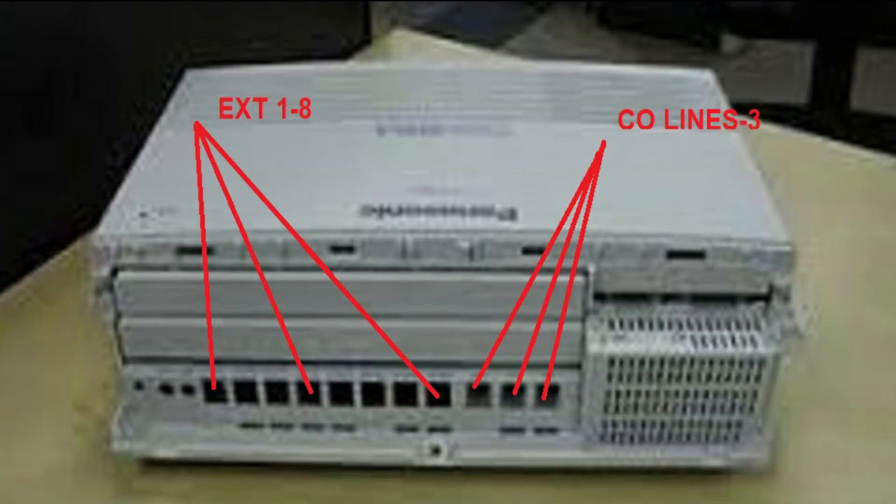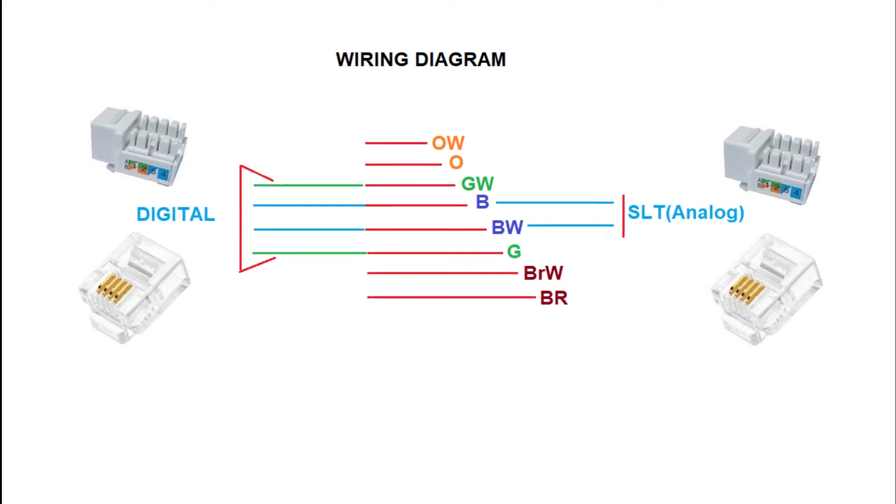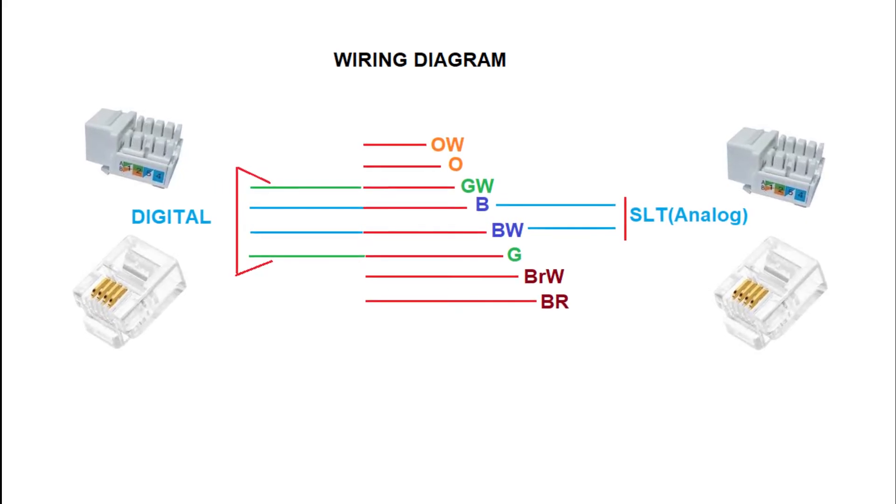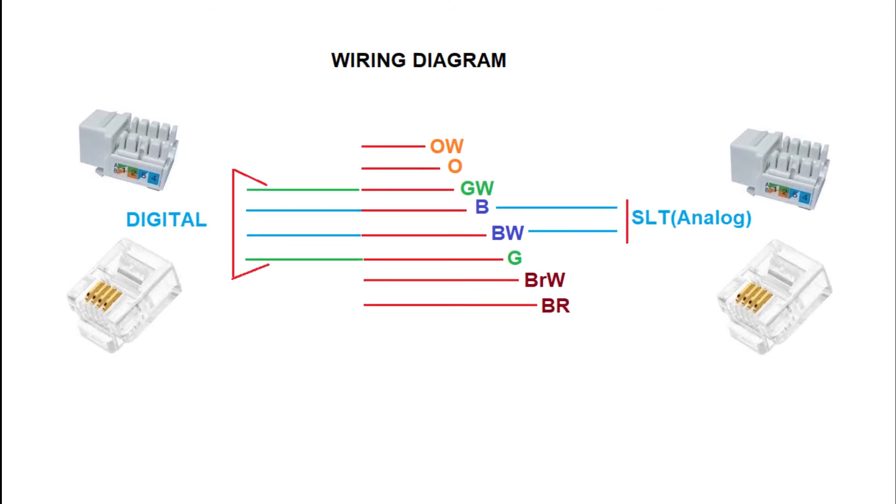Before starting, we need to know the basic structure of TES824 system. In basic model, we have inbuilt 3 CO lines and 8 extension ports. We can see here in this picture. This is a hybrid system, so we can use both analog and digital phones with this device.